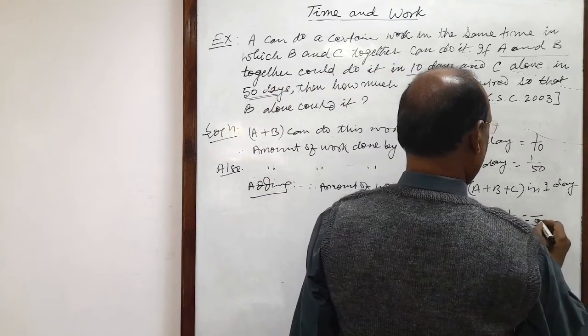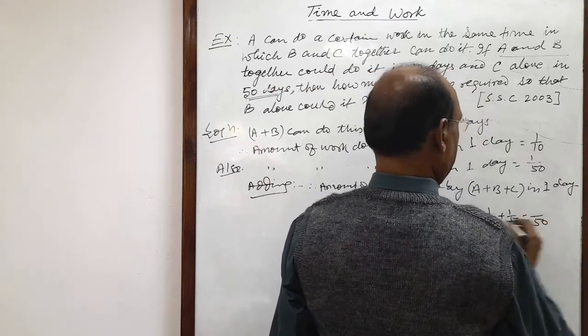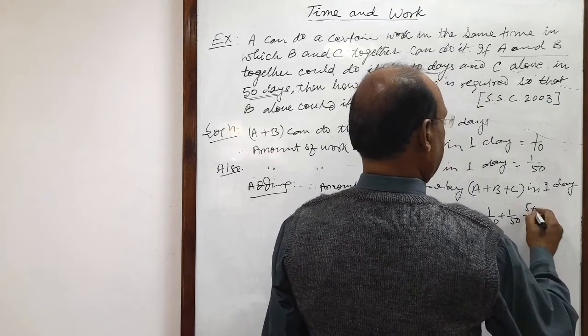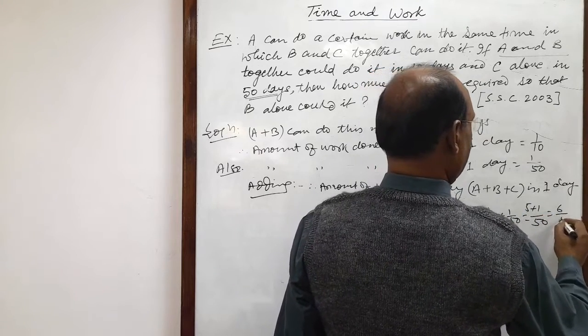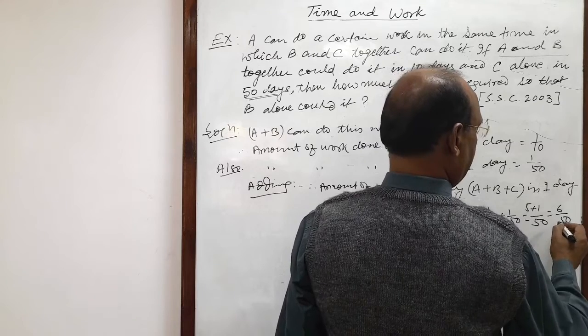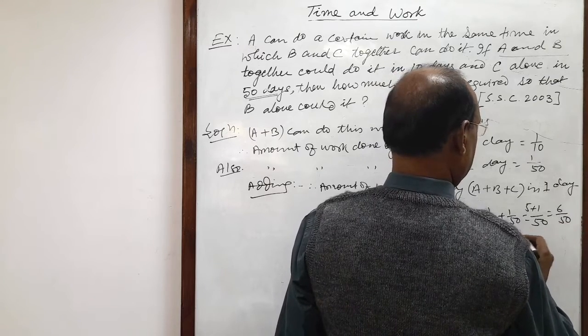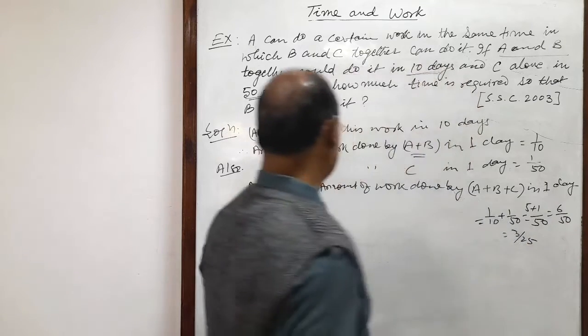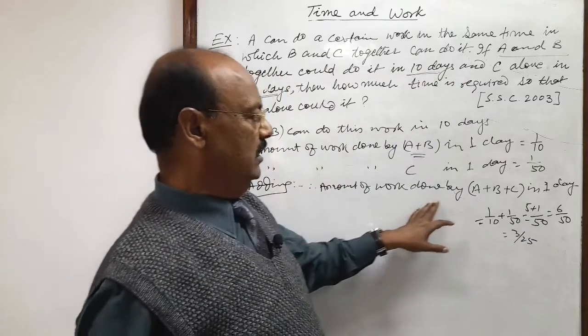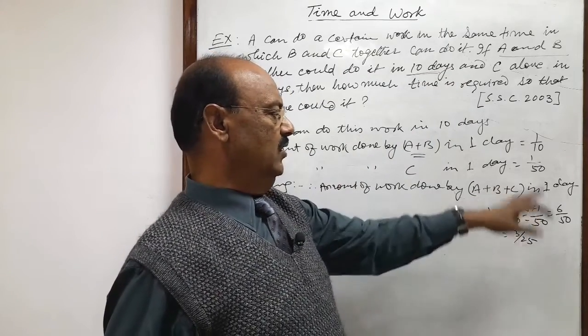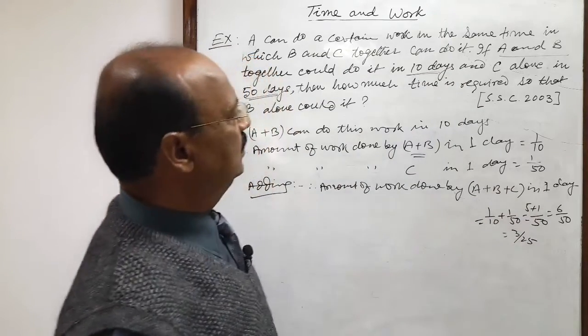LCM will be 50 and here 10 fives of 50. So 5 plus 1, this is equal to 6 by 50 and this is equal to 3 by 25. So amount of work done by A plus B plus C in 1 day is 3 by 25.